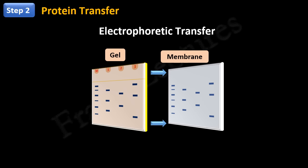The gel and the membrane are placed in the electrophoresis chamber such that gel is at the side of negative electrode and membrane is at the side of positive electrode. We know that proteins in the gel are negatively charged. So, they move out of the gel and migrate towards the positive electrode.